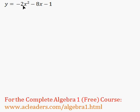Okay, now let's complete the square. We have y equals negative 2x squared minus 8x minus 1.